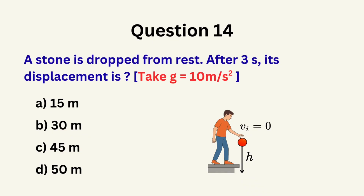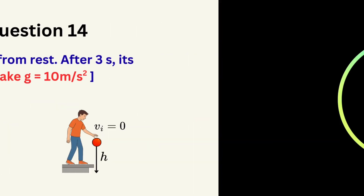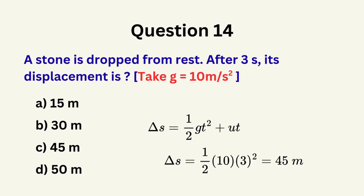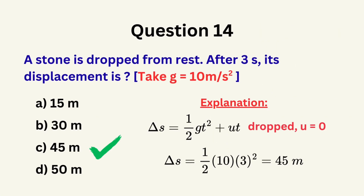Question 14: A stone is dropped from rest. After 3 seconds, its displacement is... A. 15 meters, B. 30 meters, C. 45 meters, D. 50 meters. The correct answer is C: 45 meters.